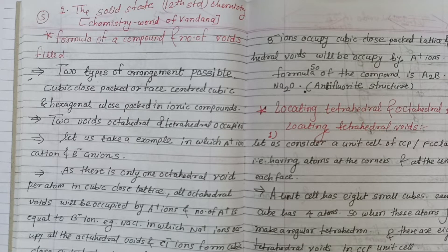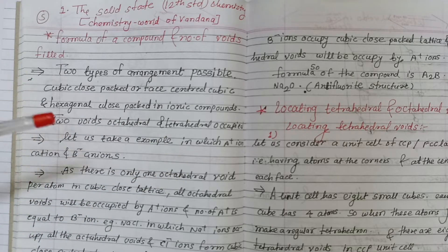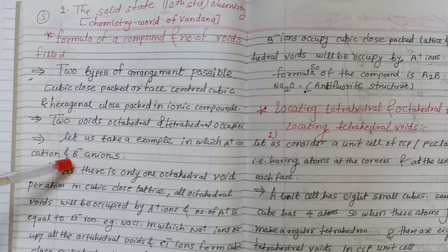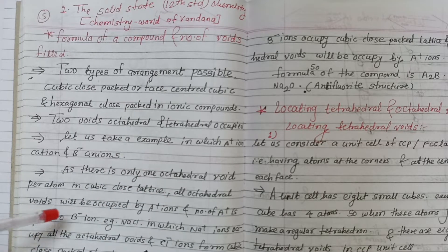In ionic compounds, we need to know how the total components are arranged between two different elements. There are two voids: one is octahedral and the other is tetrahedral. As there is only one octahedral void per atom in a cubic close lattice, all octahedral voids will be occupied by A+ ions, and the number of A+ ions equals B- ions.